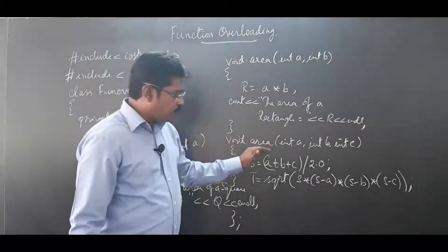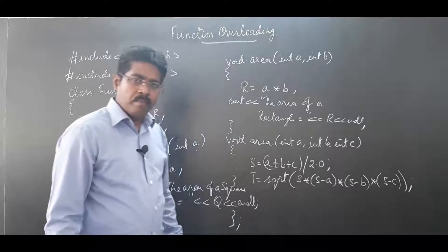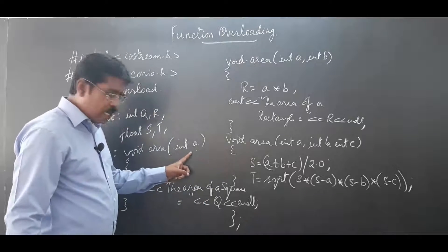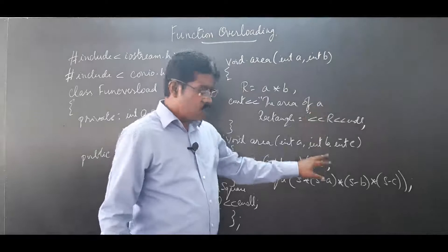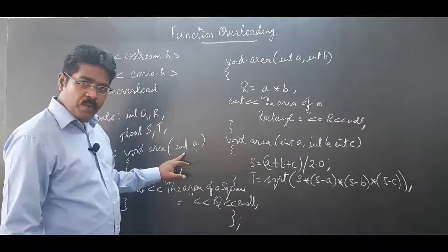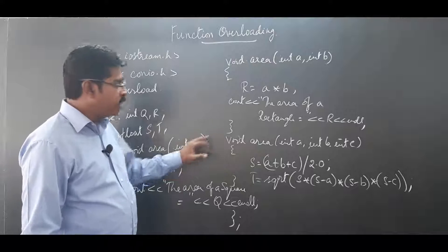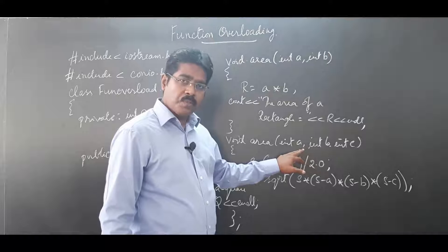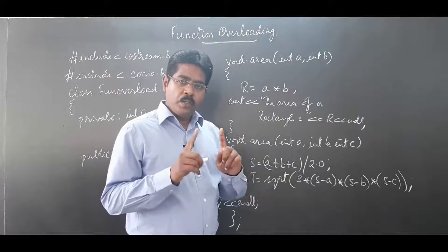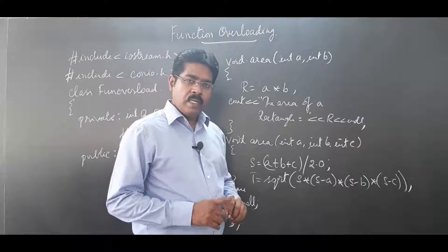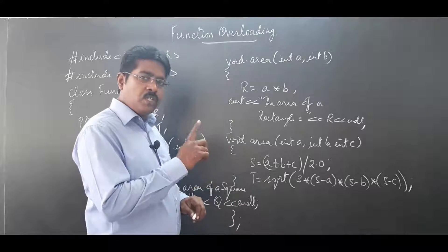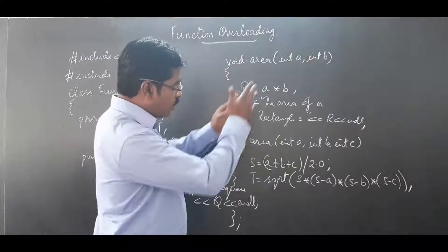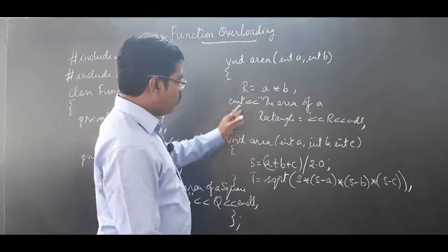All three member functions have the same name — 'area' — but differ: void area has one argument (int a) for square, two arguments (int a, int b) for rectangle, and three arguments (int a, int b, int c) for triangle. The compiler, during compilation, identifies which function needs to be executed according to the number of arguments passed in the function call statement.